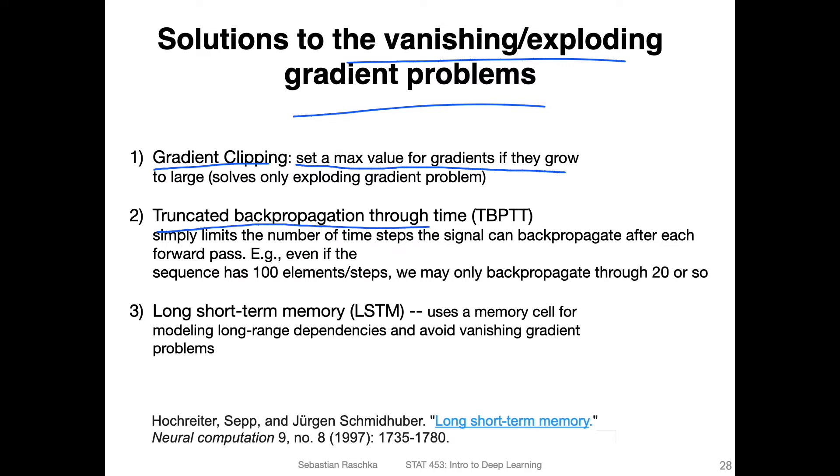Another one is called truncated backpropagation through time. This is a simple technique for limiting the number of time steps during backpropagation. When you have a long sequence, for forward propagation you may use the whole sequence, but then when you backpropagate for the hidden layers, you only maybe backpropagate through the last 20 time steps or so. You don't backpropagate through the whole sequence, and it might work pretty well.